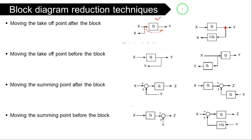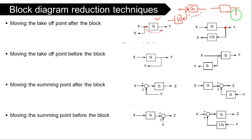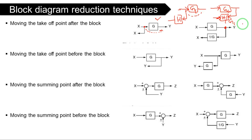For example, if you have blocks G1 and G2, and a takeoff point is moved to the right side after G2, then the value in that branch becomes H divided by G2. That is the result when moving the takeoff point after the block — divide by the block.